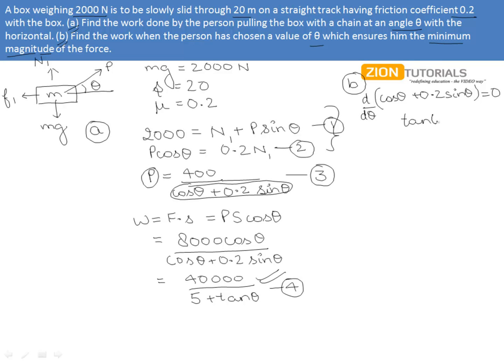Here we got tanθ equals to 0.2. This means that for this value of tanθ, this denominator will be maximum which in turn will provide us the P minimum.